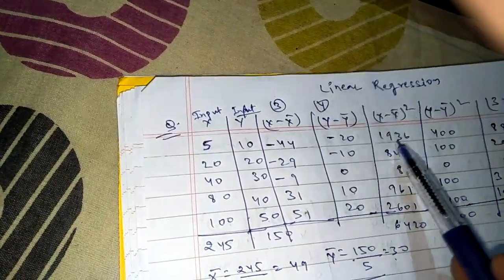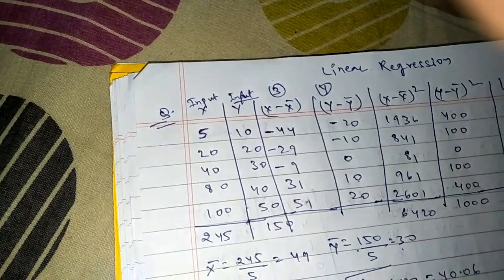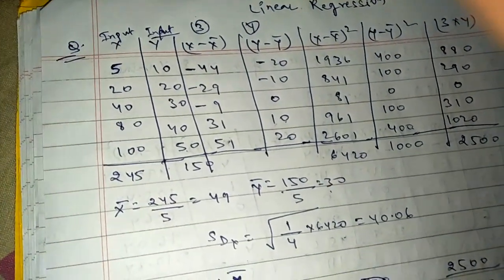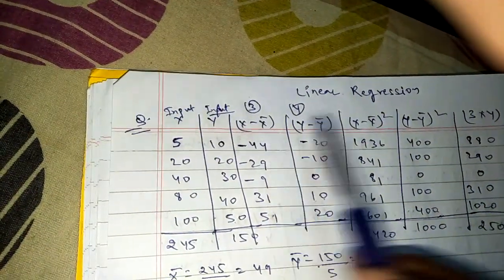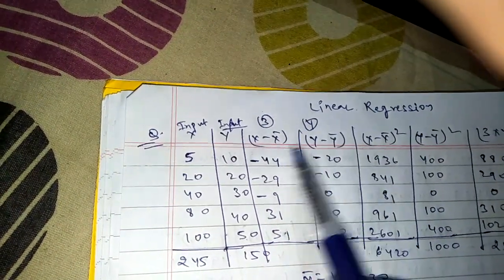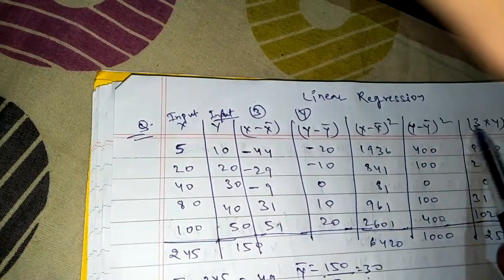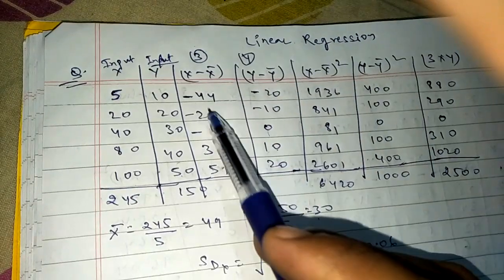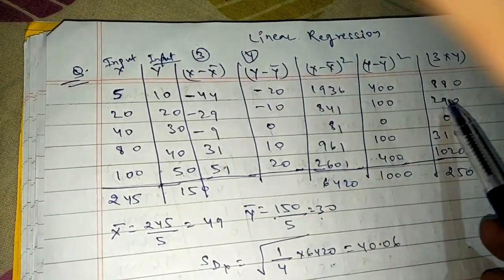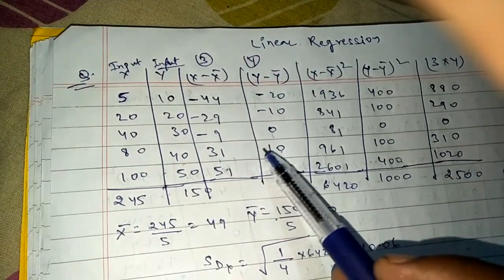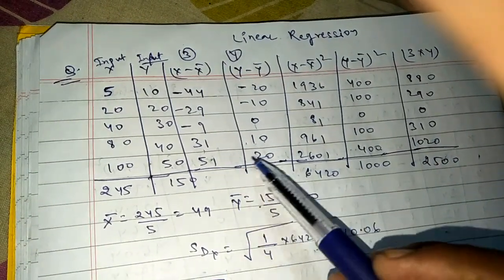Calculate (x minus x̄) squared: 1936, 841, 81, 961, 2601. Summation is 6420. (y minus ȳ) squared: 400, 100, 0, 100, 400. Summation is 1000. Now multiply (x minus x̄) by (y minus ȳ): -44 times -20 = 880, -29 times -10 = 290, -9 times 0 = 0, 31 times 10 = 310, 51 times 20 = 1020. Summation is 2500.